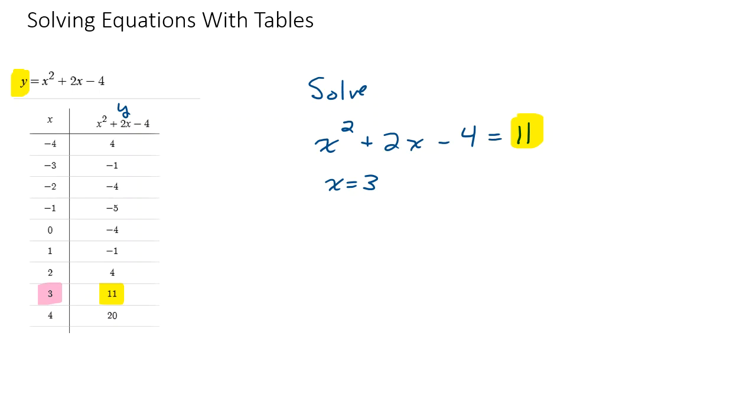But there's actually another solution, even though you can't quite see it in the table. There's a pattern to this table. Do you see it? You've got two negative fours right here in the y column, and then you've got two negative ones right here, and you've got two fours right here. And so that means that you're going to have two 11s.